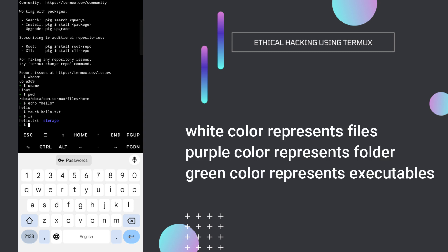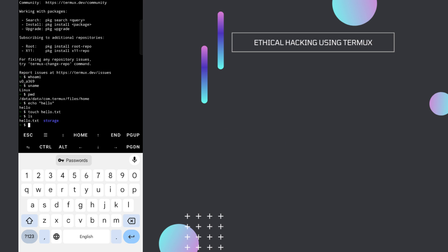In Termux you will see files or folders in basically three colors. If the file name is in white, like hello.txt here, it is a normal file. If the name is in purple, like storage here, it's a folder. We set up storage in the previous video using the command termux-setup-storage to allow Termux to access our internal storage. The third color is green, which is for executables — we'll learn about those in upcoming tutorials.